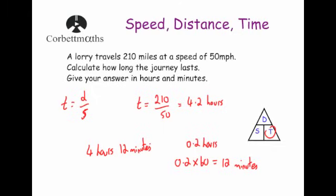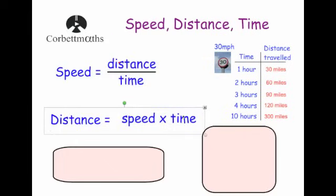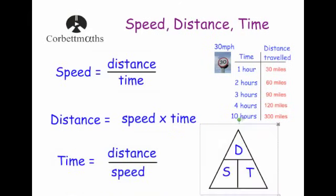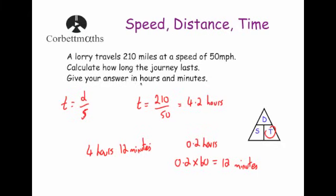The key things to learn from this video: the relationships between speed, distance and time — speed = distance ÷ time, distance = speed × time, time = distance ÷ speed — summarised in a triangle with S, D, T. Or figure it out by remembering what the units mean. Be careful with mixed units: convert hours and minutes into hours, and if you need an answer in hours and minutes, multiply the decimal part by 60 to get the minutes.